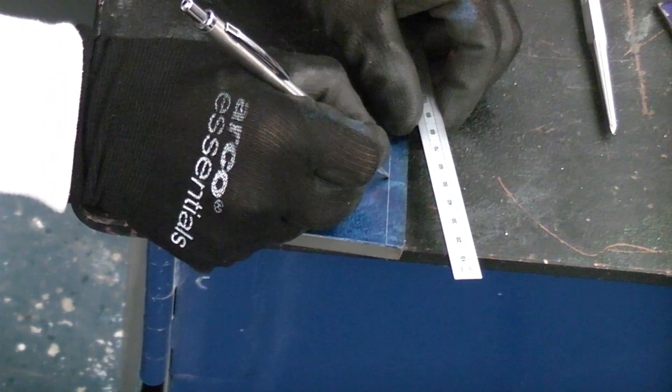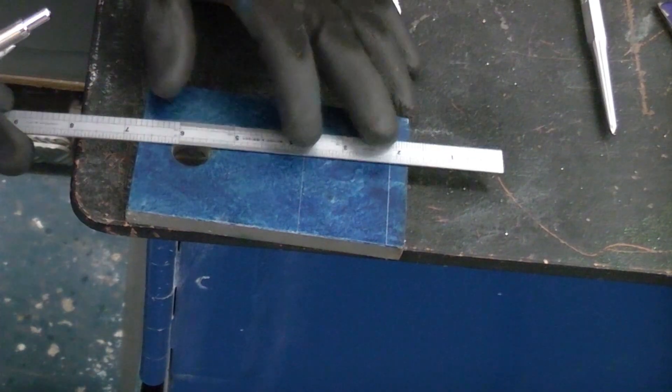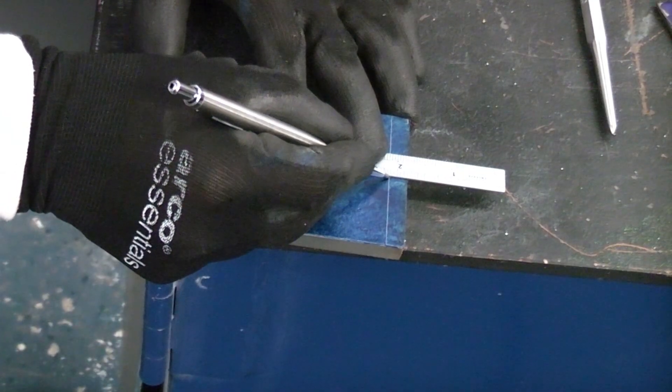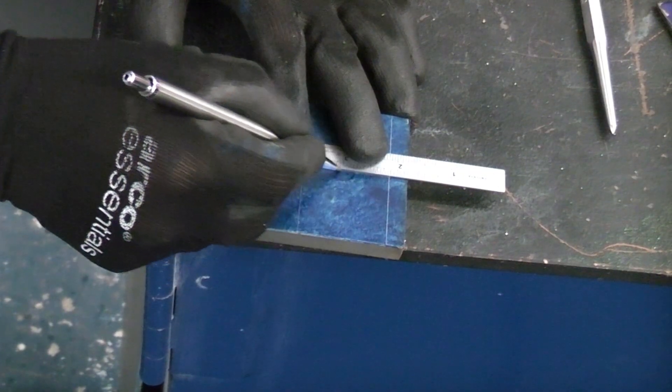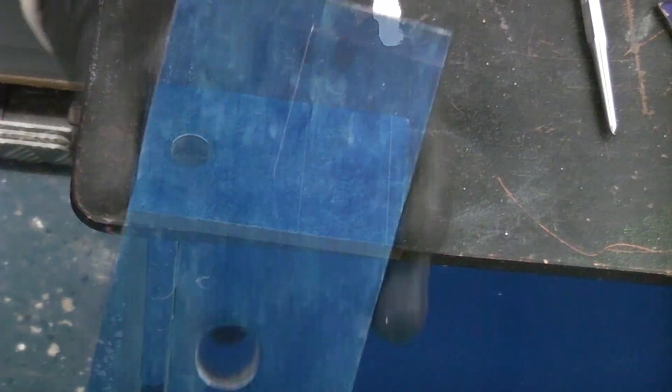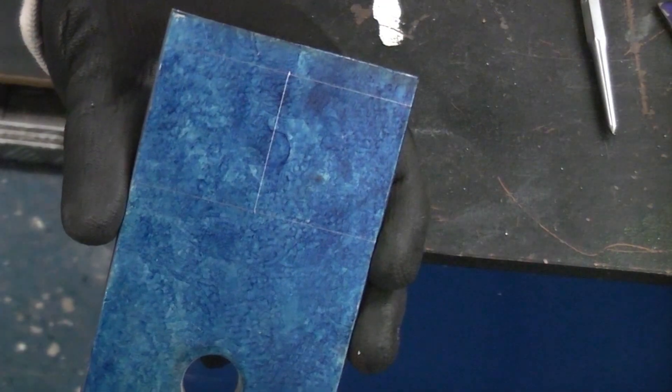Obviously if you're in America you'll be doing this in imperial sizes which is a lot more difficult. Now we've done that we can now scribe the line in between those two marks. You should be able to see it quite clearly because of the marking out fluid that we've used.